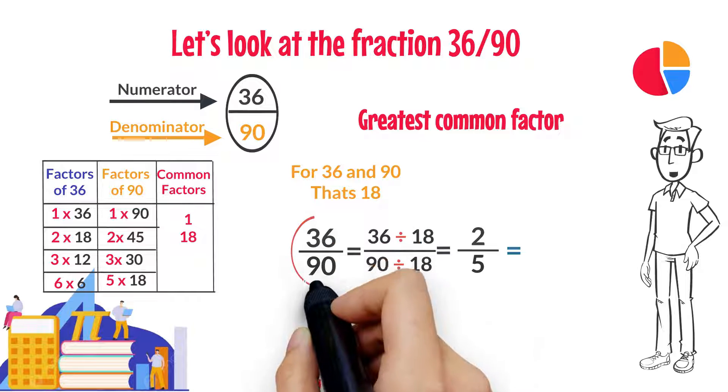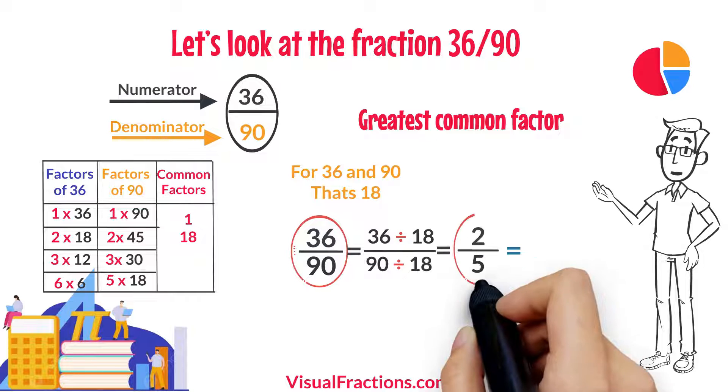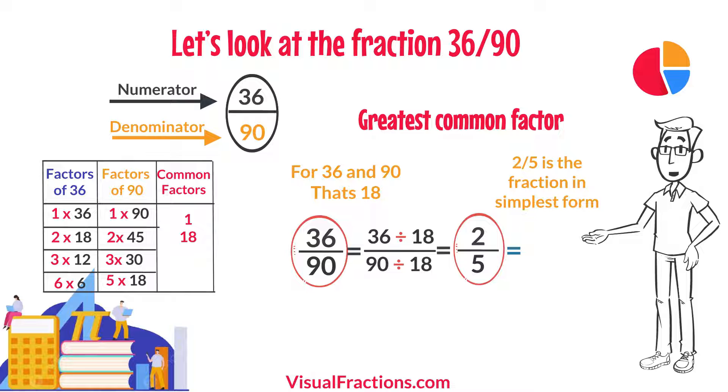So, simplifying 36/90, we end up with 2/5, which is the fraction in its simplest form.